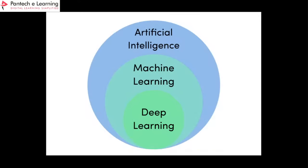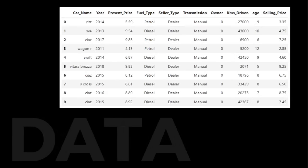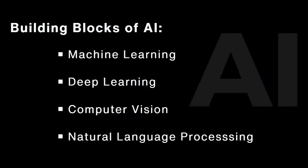So this is a summary: the basic block of AI is machine learning, and some advanced version of machine learning is called deep learning. A subset of AI is machine learning, and a subset of machine learning is deep learning. Machine learning and deep learning are fine — but then what are computer vision and natural language processing?